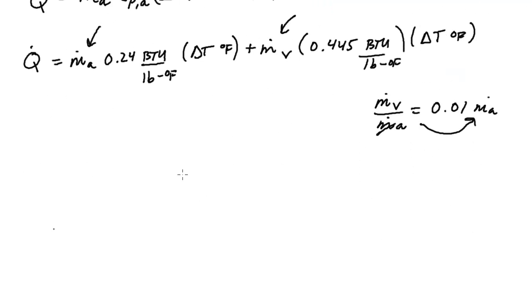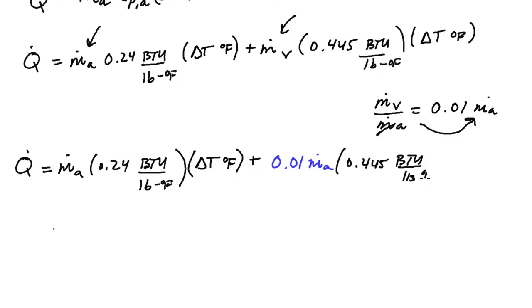So let me go ahead and rewrite that. We have Q dot is M dot A times 0.24 BTU per pound degree F multiplied by your delta T, your change in temperature multiplied. So this M dot V now got changed into 0.01 M dot A, and we're going to multiply that by our temperature 0.445 BTU per pound degree F, poor handwriting, delta T, degree F.